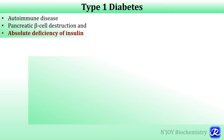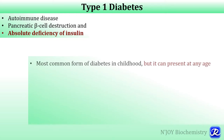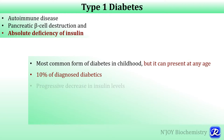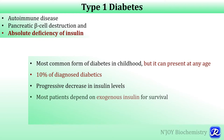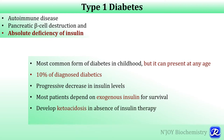Type 1 diabetes is an autoimmune disease characterized by pancreatic beta cell destruction and absolute deficiency of insulin. This is the most common form of diabetes in childhood, however it can present at any age, and type 1 diabetes accounts for 10 percent of diagnosed cases of diabetes. There is progressive decrease in insulin level and most patients depend on exogenous insulin for survival. Diabetic ketoacidosis is the acute complication seen in patients of type 1 diabetes if insulin therapy is not given.